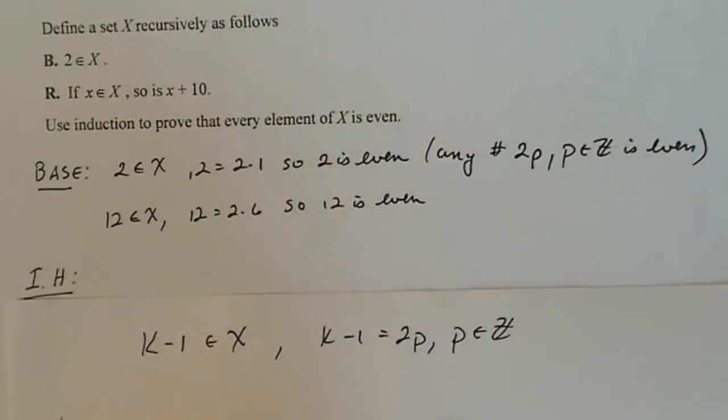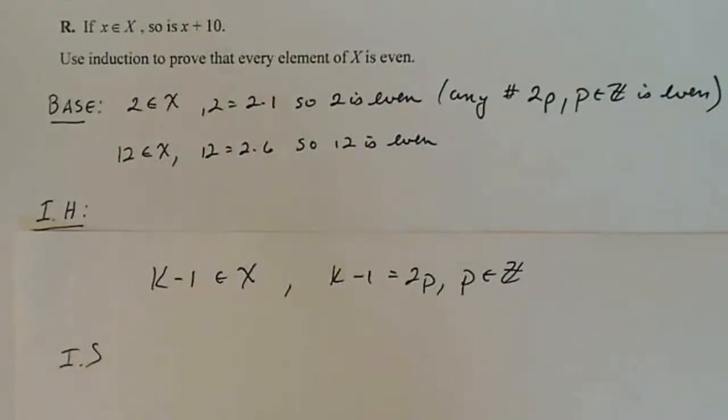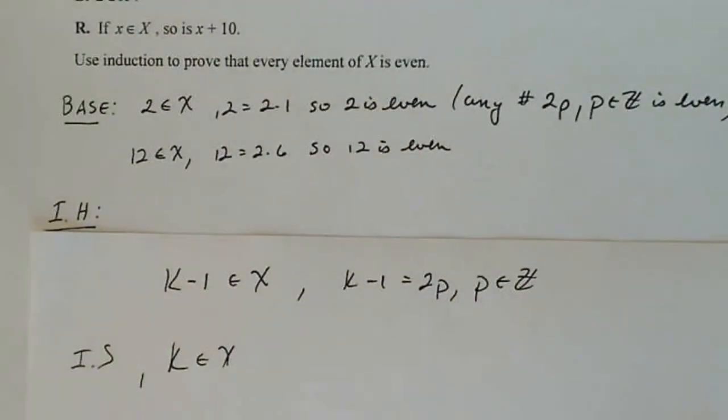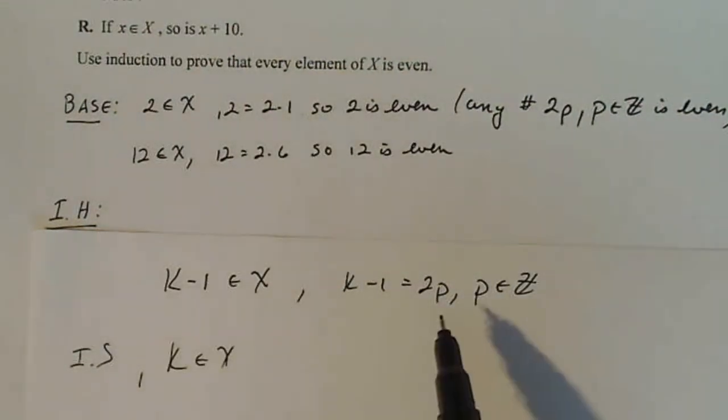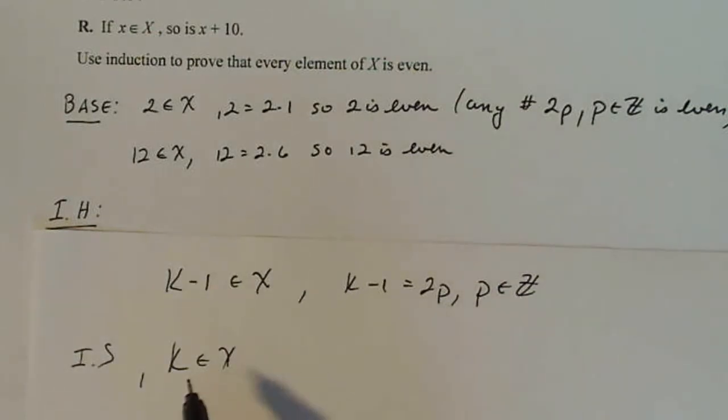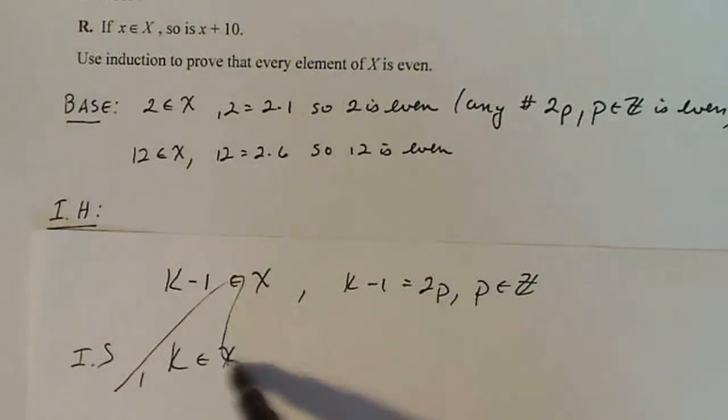But what happens when I do the inductive step? I have to start with k. I have to start with some k in X. Now what's the problem with that? Can you think about why that's a problem about going about it this way? I mean we've learned from class that there's a variety of ways that you can look at things. It doesn't have to be strictly along the lines of k minus 1 and k. The problem: if k minus 1 is even, what does that force k to be? It forces k to be odd. So this method of looking at it won't work.